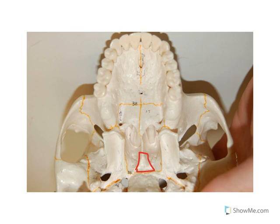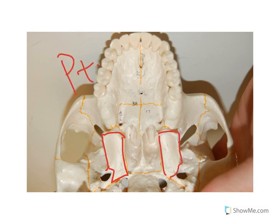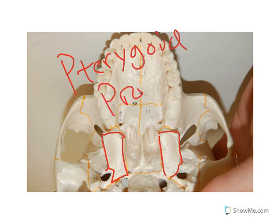We can see the bone known as the vomer here. Also, you can see these structures of the sphenoid bone — these are called the pterygoid processes. There are two pterygoid processes there.